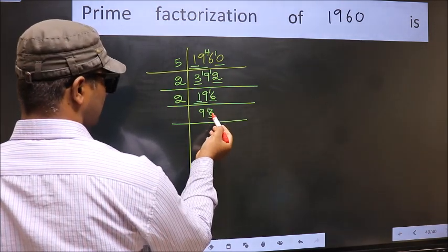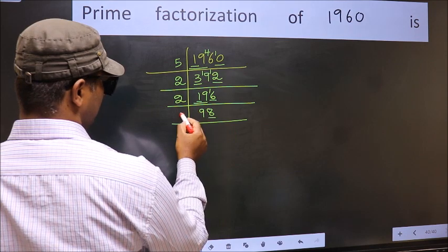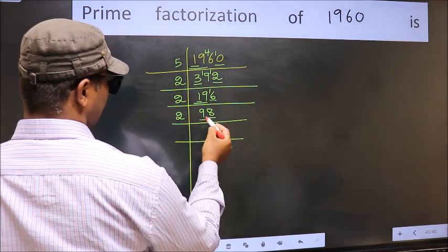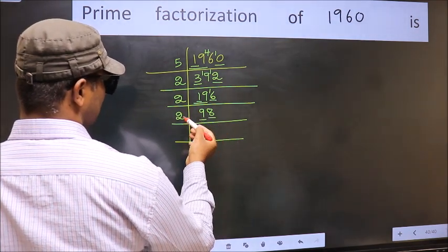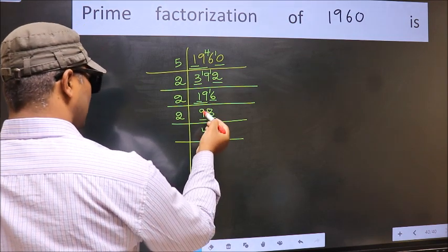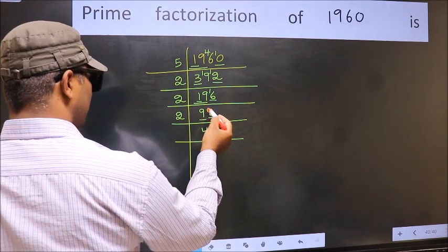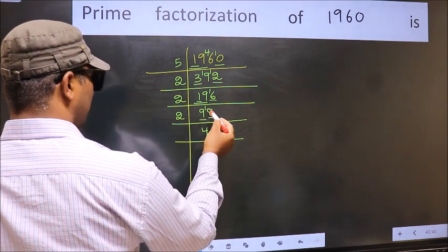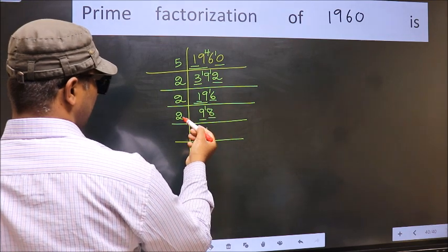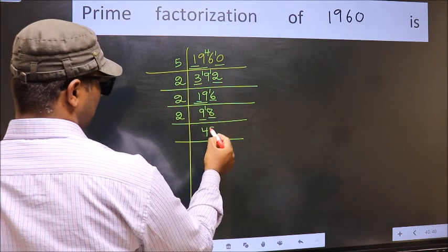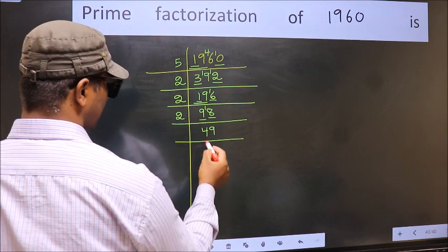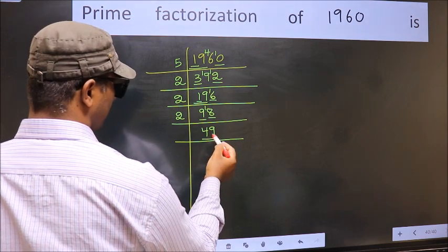Now the last digit is 8, so take 2. First number is 9. A number close to 9 in the 2 table is 2 times 4 is 8. 9 minus 8 is 1; 1 carried forward gives 18. We get 18 in the 2 table at 2 times 9 is 18. Now here we have 49.